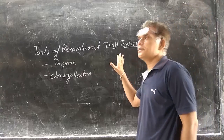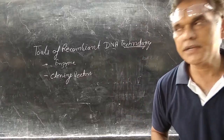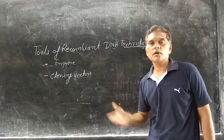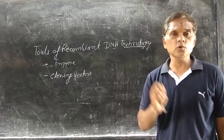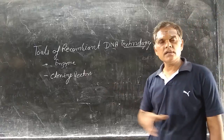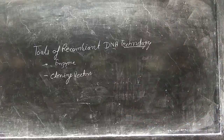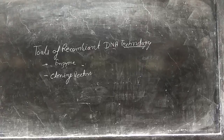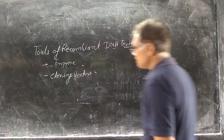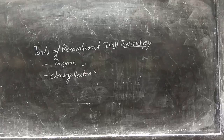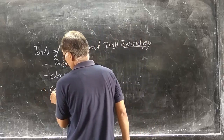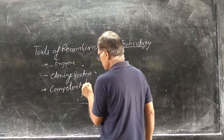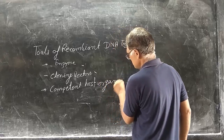Tools of recombinant DNA technology, that is genetic engineering. For formation of recombinant DNA, different tools and technology are required. Firstly we study the tools — what is the requirement of recombinant DNA technology. First is enzymes, different types of enzymes required. Second one is cloning vector. Third one is competent host organism.